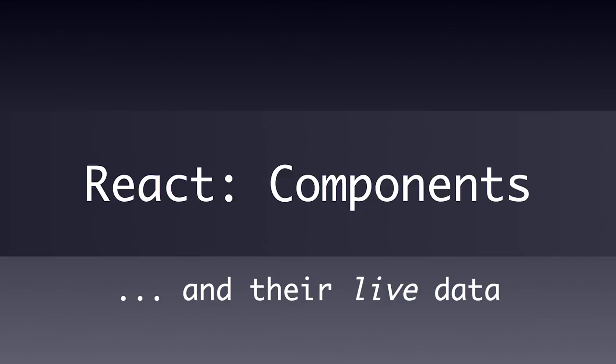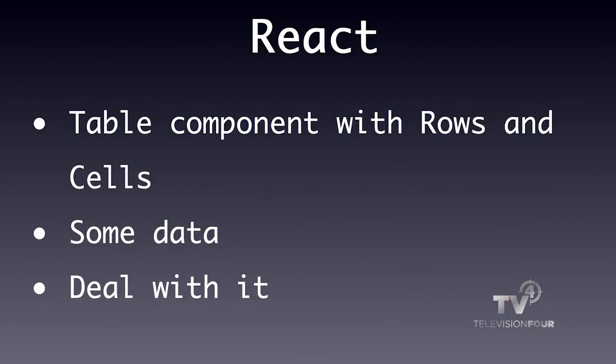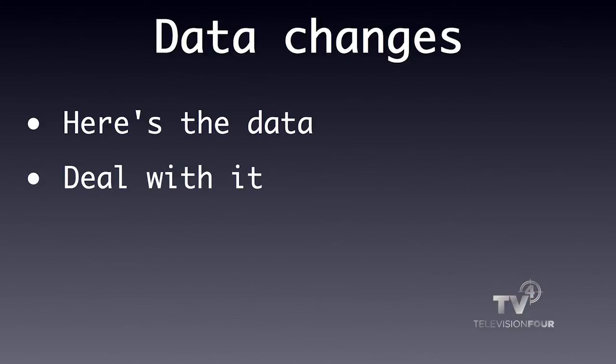That's what React comes with — the idea that everything is just components. Components have some data, and the component knows how to render itself. Whenever the data changes, from the developer's perspective the component is just re-rendered again, so you don't have to worry about it. Going back to the table example: you have a table component with rows and cells, and you as a developer say 'here's my data, deal with it.' When data changes you don't say what changed in the DOM hierarchy — you just say 'here's the updated state, do your thing.'